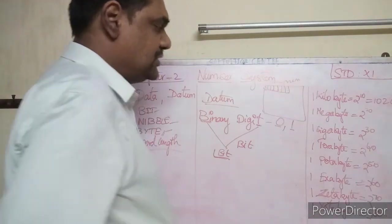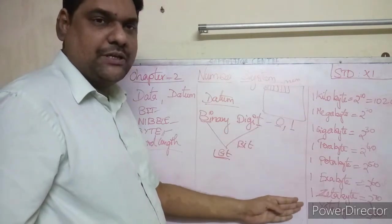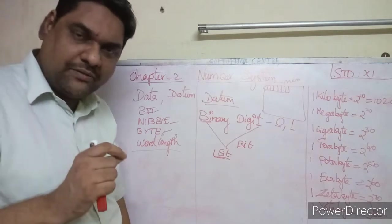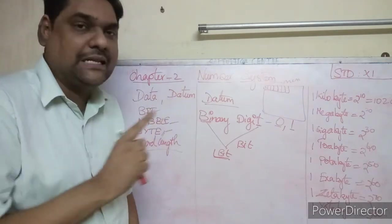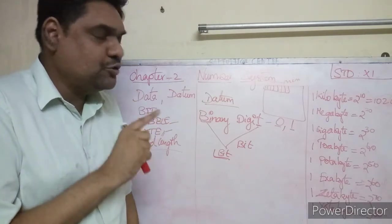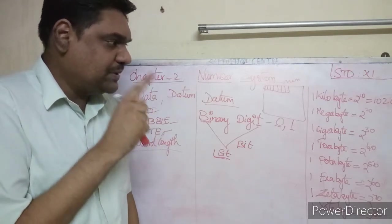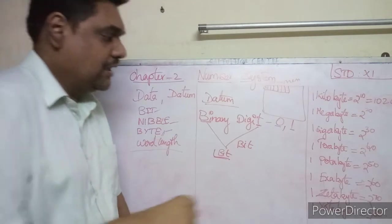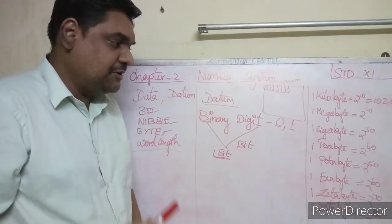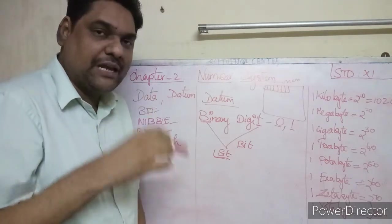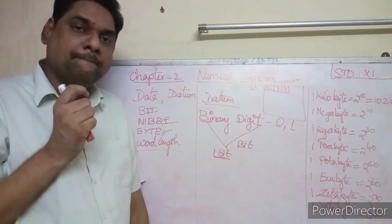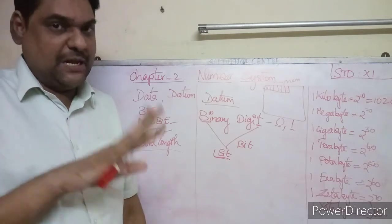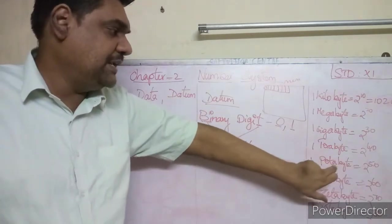The table of memory units is very important. 1 kilobyte equals 2 to the power 10 bytes, 1 megabyte equals 2 to the power 20 bytes, 1 gigabyte equals 2 to the power 30 bytes, 1 terabyte equals 2 to the power 40 bytes, and 1 petabyte equals 2 to the power 50 bytes.